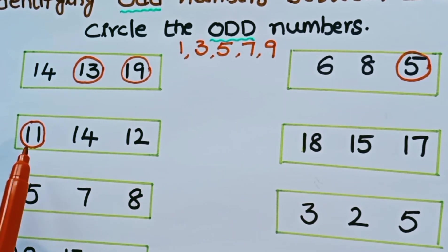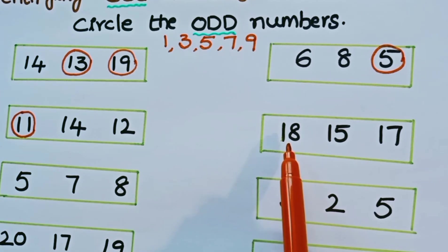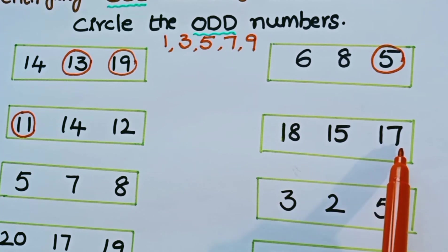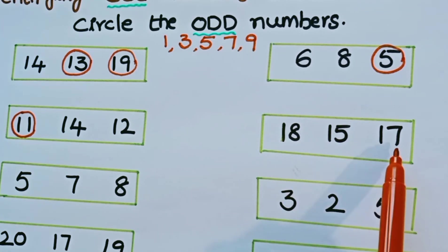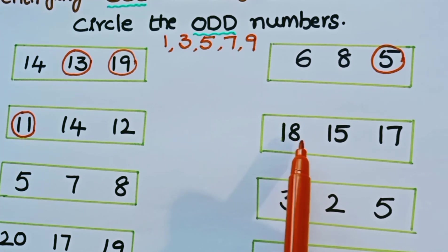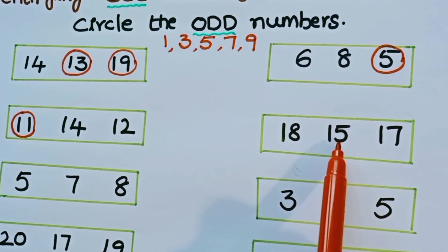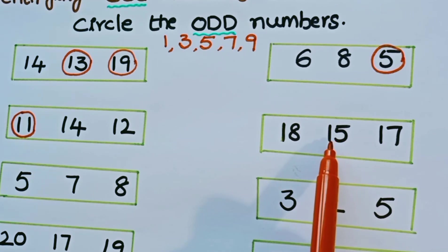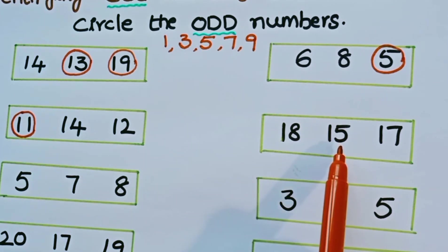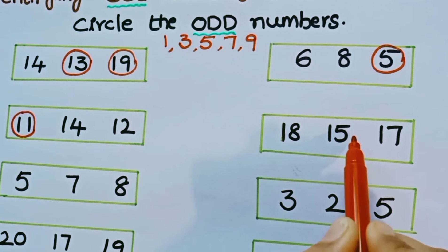So in that row we have only one odd number. The next row has 18, 15, and 17. Is 18 odd or even? It is an even number because 18 ends with 8. Is 15 odd or even? 15 is ending with 5, so it is an odd number. Let us circle 15. Is 17 odd or even? It is an odd number because it ends with 7. Let us circle 17.